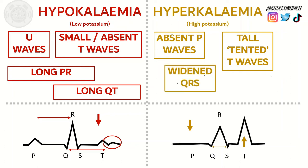So if we see any of these changes on an ECG, we ideally want to get a blood U&E test for the patient, which will show what the potassium levels are doing.